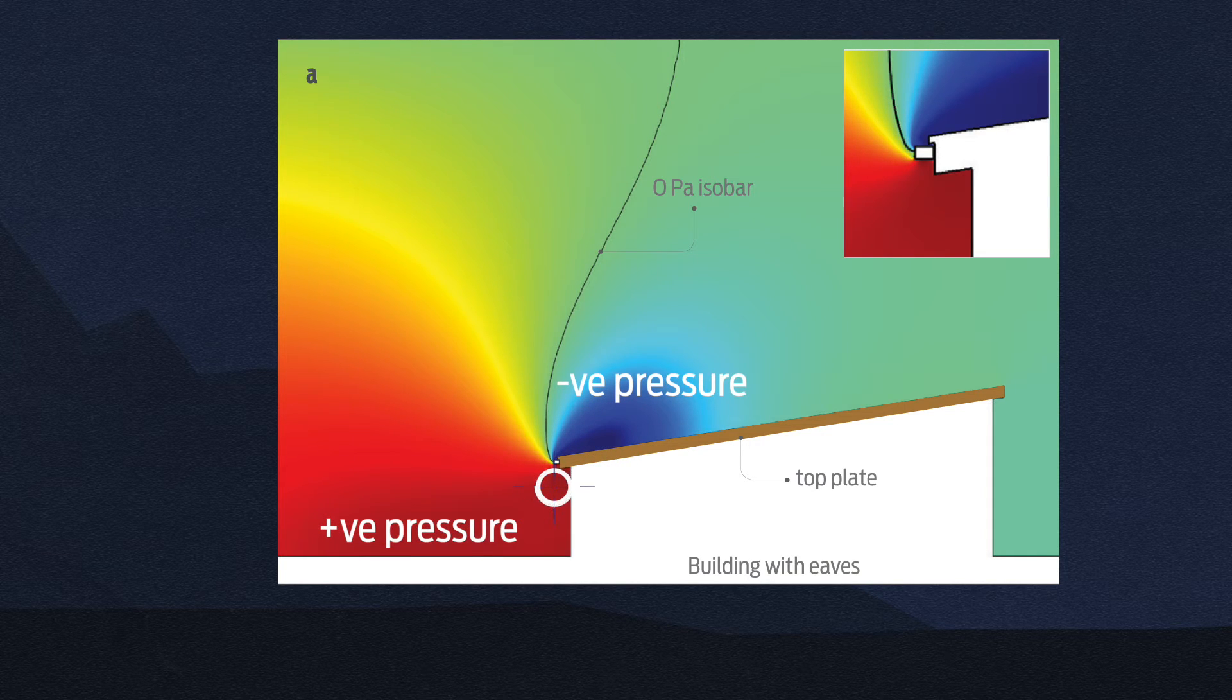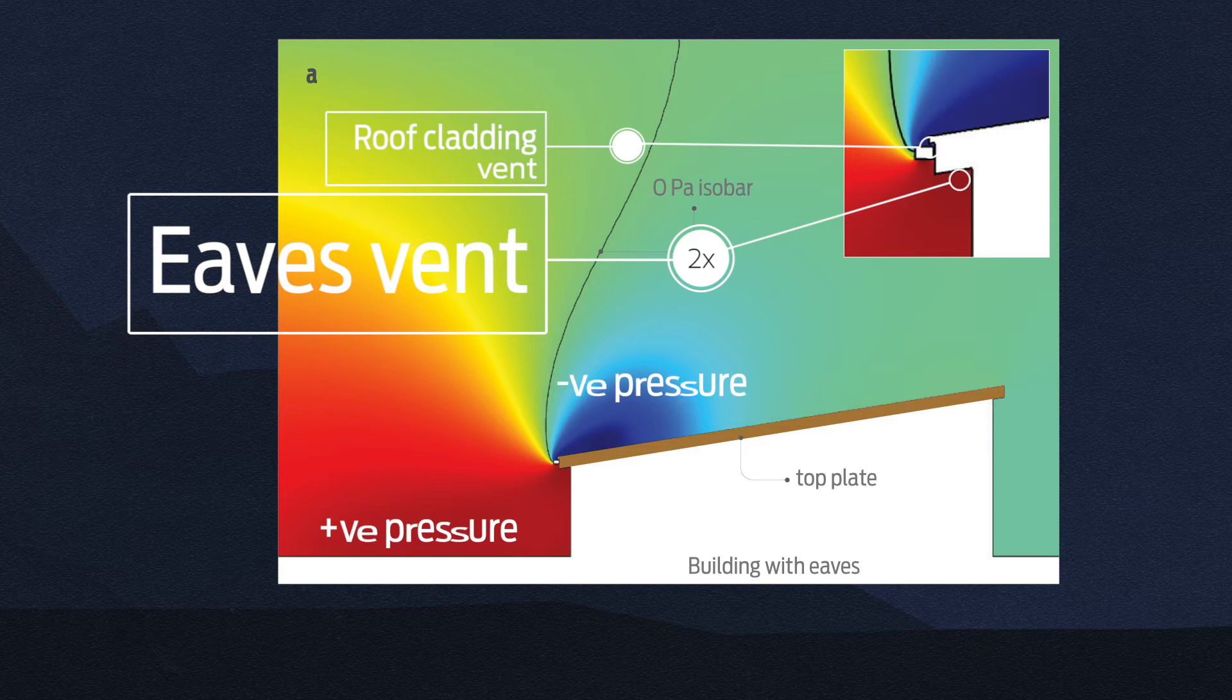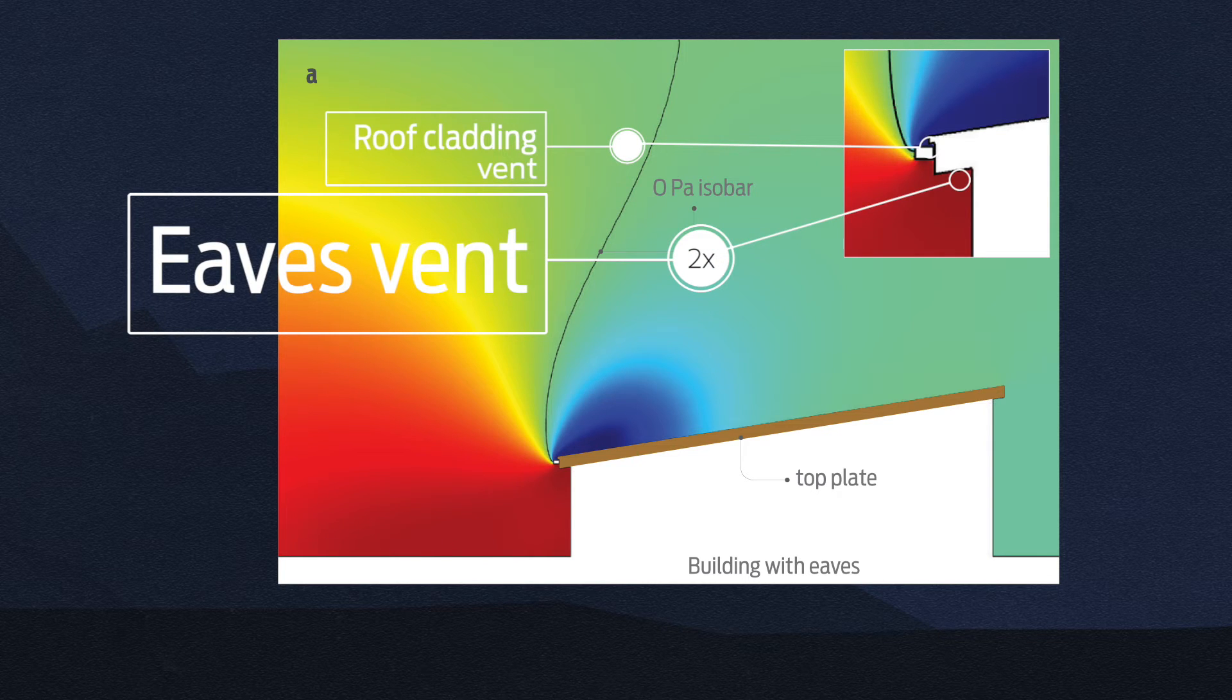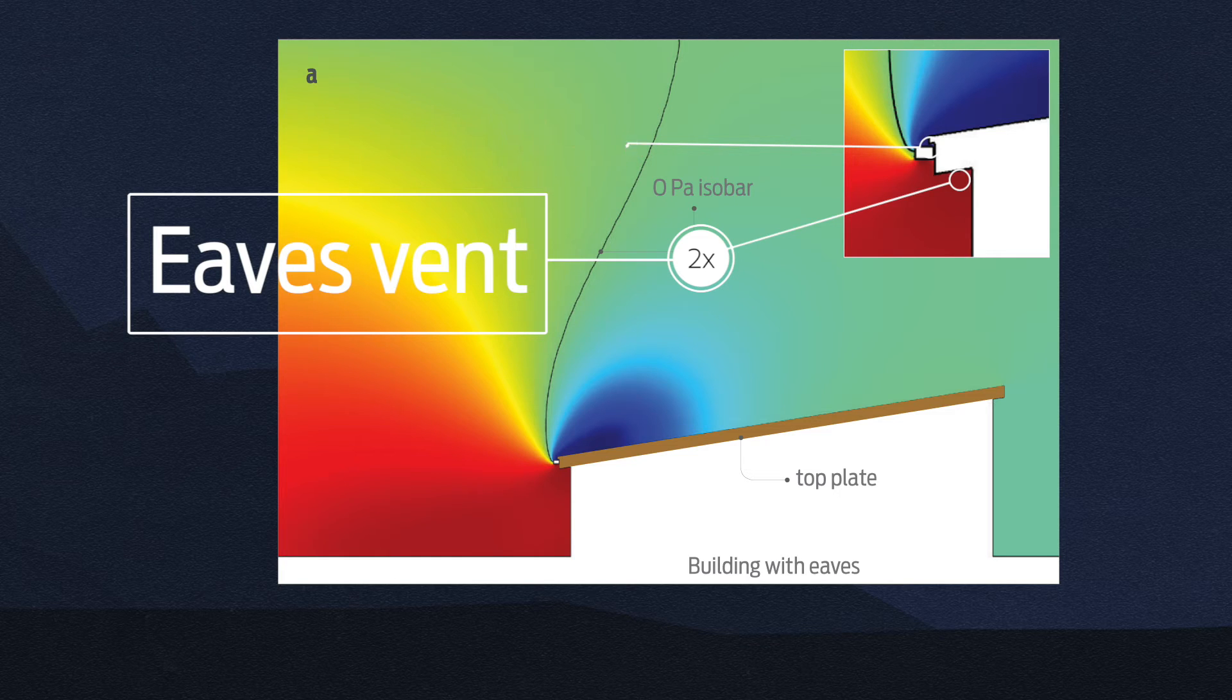Using eave vents to achieve pressure differences is almost a factor of two better than using a vent near the roof cladding. This suggests that the vent location under the eaves is preferable in low wind conditions.